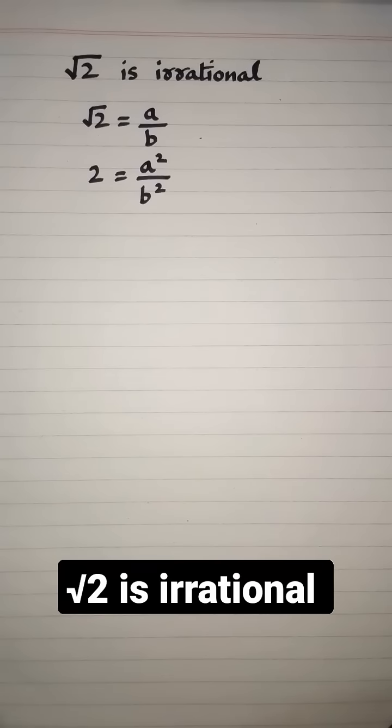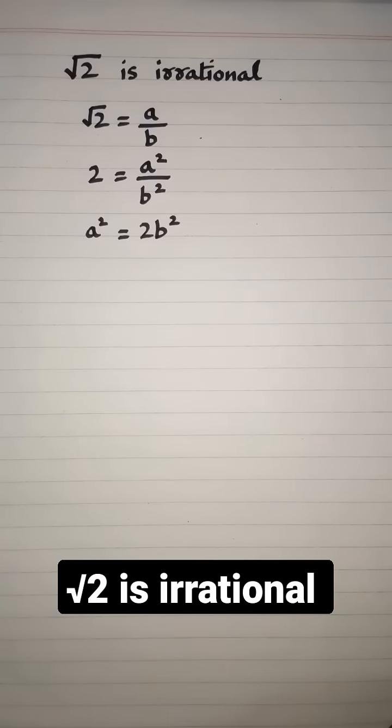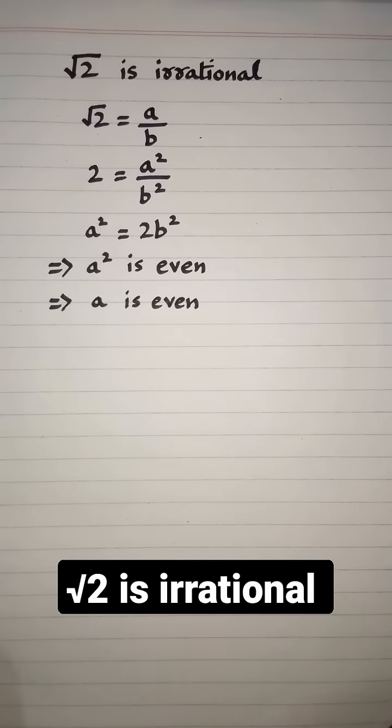Squaring both sides we get 2 equals a² upon b², and this can be written as a² equals 2b². This implies a² is even, so a is even.